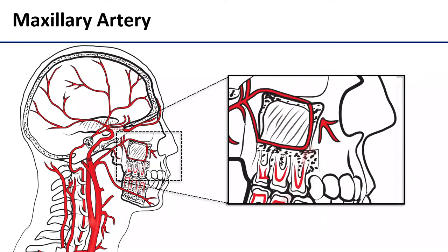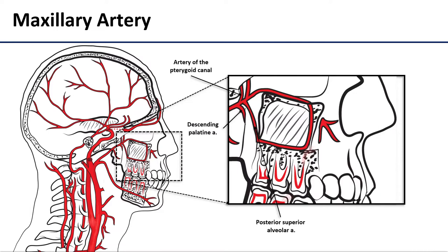To see these branches, we have to zoom in pretty close on this region, so that's what I've done on the slide. Coming off that third part of the maxillary artery, we have the descending palatine artery, the posterior superior alveolar artery, the artery of the pterygoid canal, the sphenopalatine artery, and then the infraorbital artery and its branch, the anterior superior alveolar artery.